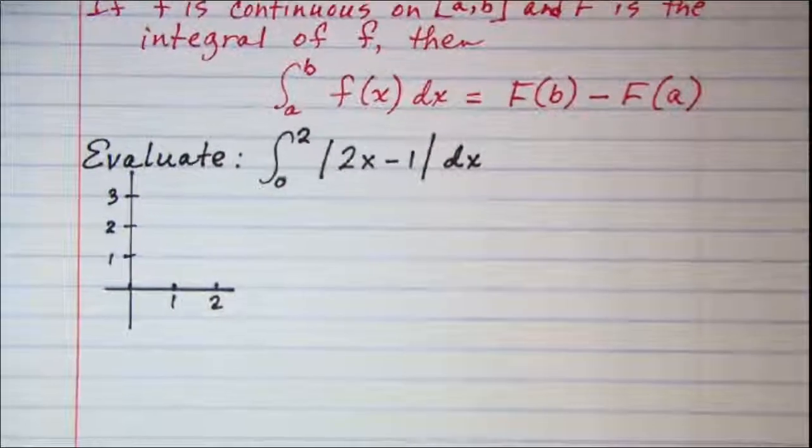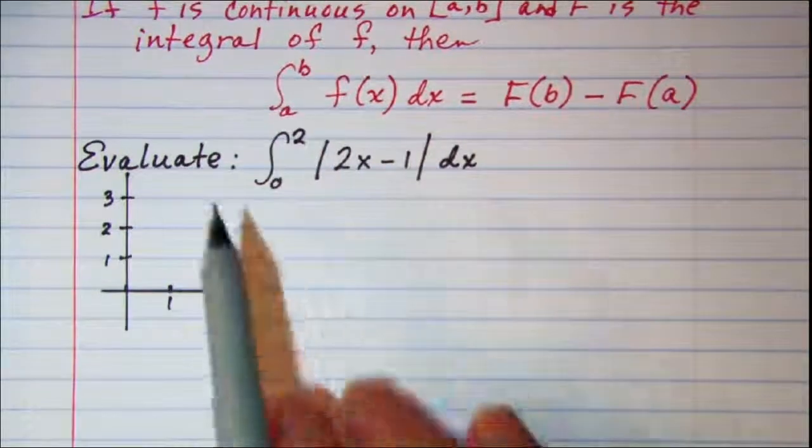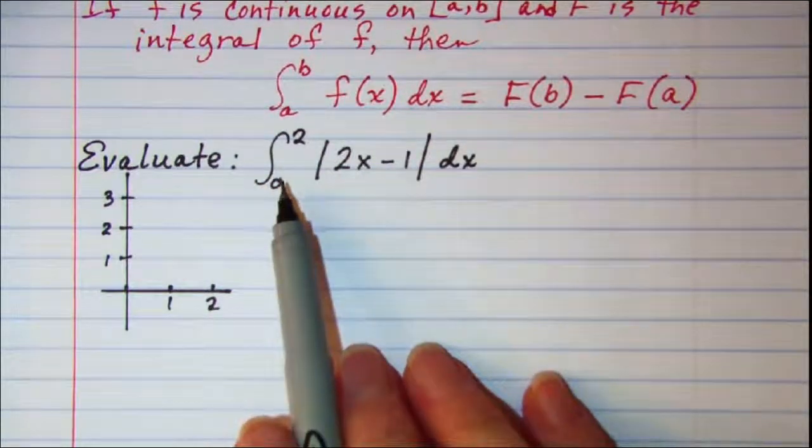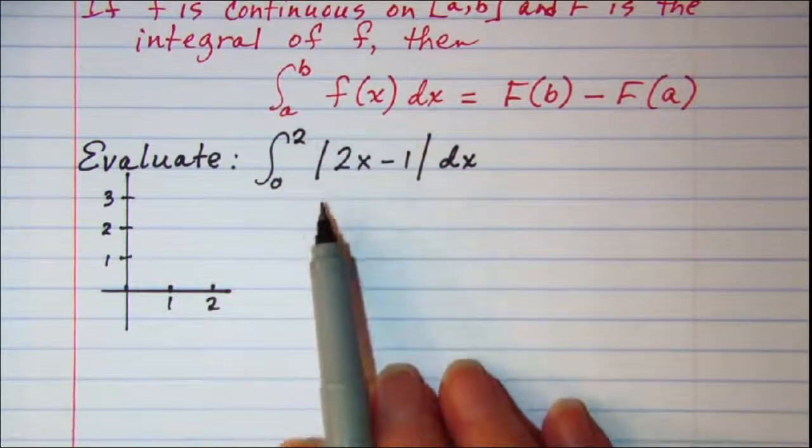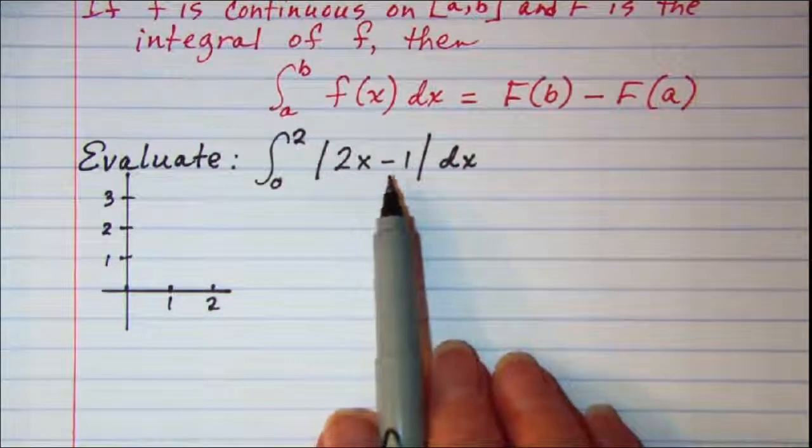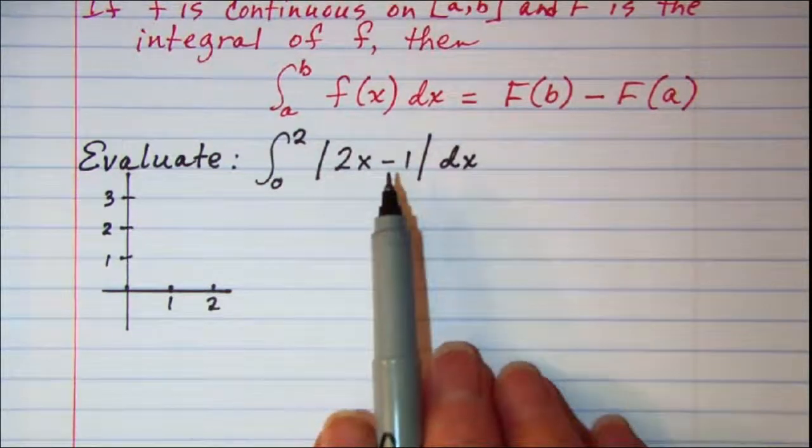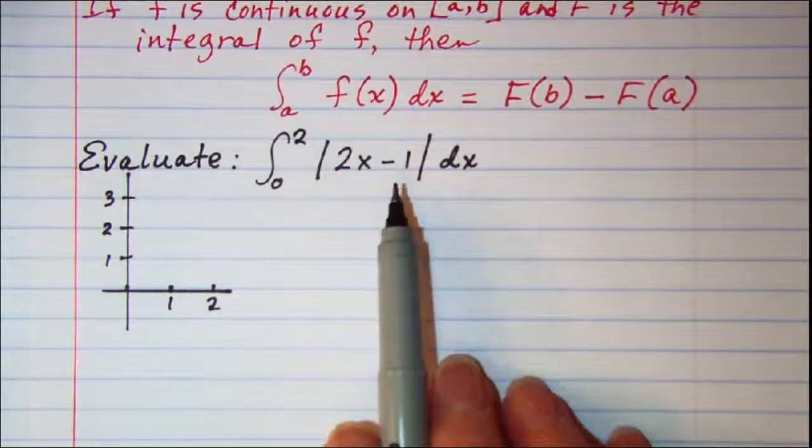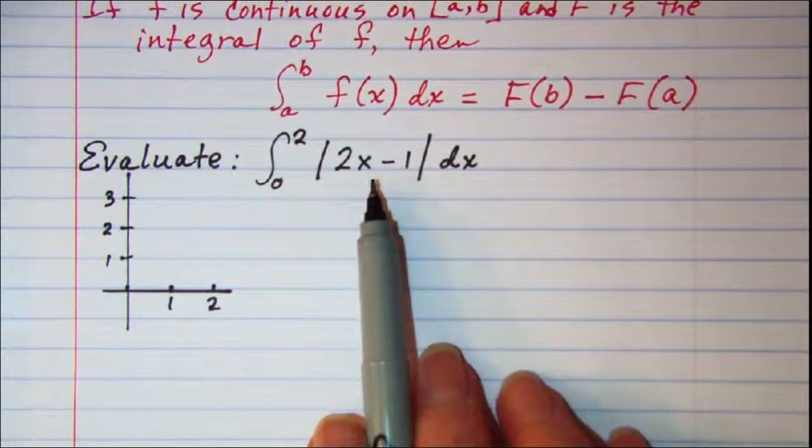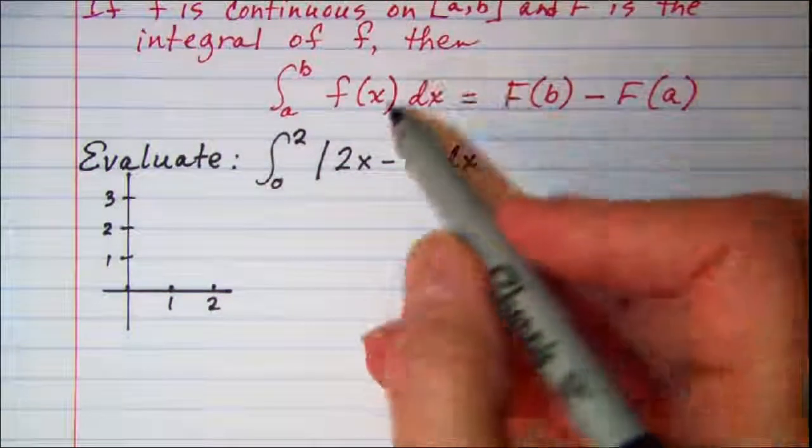Our problem is to evaluate the definite integral from 0 to 2 of the absolute value of 2x minus 1 dx. Now we need to look at the graph of absolute value of 2x minus 1. So let's do that.